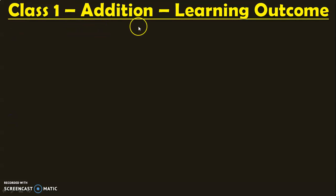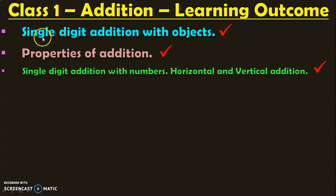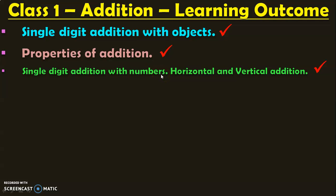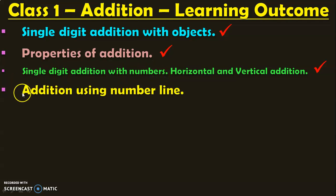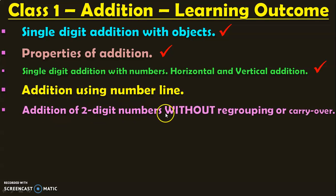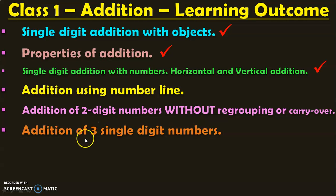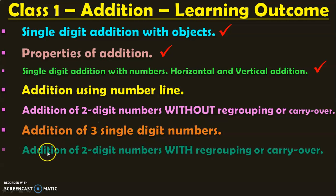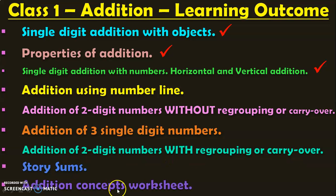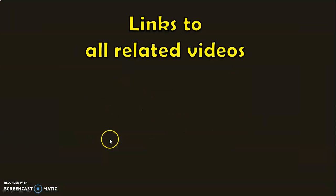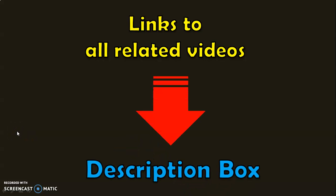In the learning outcome in class 1 under the topic addition, we have completed: single-digit addition with objects, properties of addition, and single-digit addition with numbers in both horizontal and vertical type. All these topics are covered in separate videos. The upcoming topics — addition using number line, addition of 2-digit numbers without regrouping or carry-over, addition of 3 single-digit numbers, addition of 2-digit numbers with regrouping or carry-over, story sums, and addition concept worksheet — will also be dealt with in separate videos. Links to all related videos will be given in the description box.